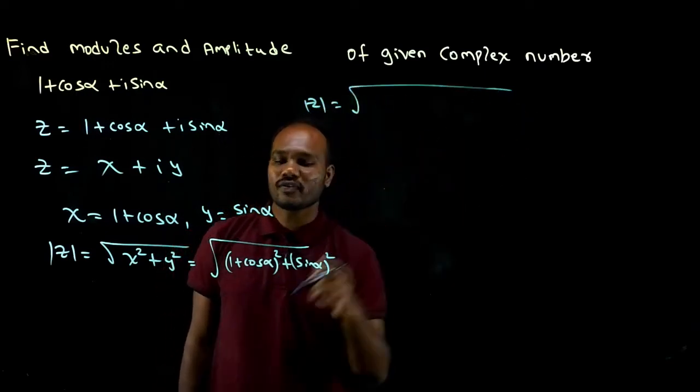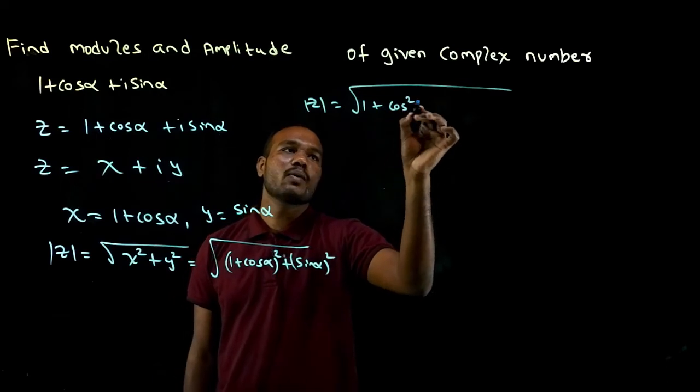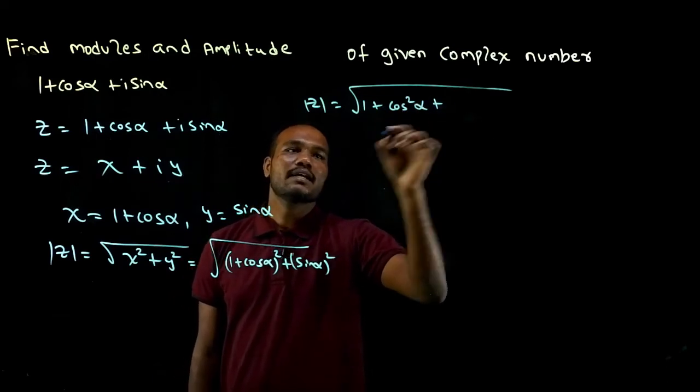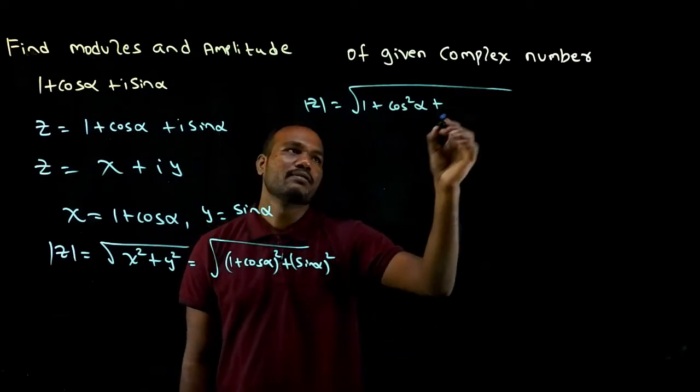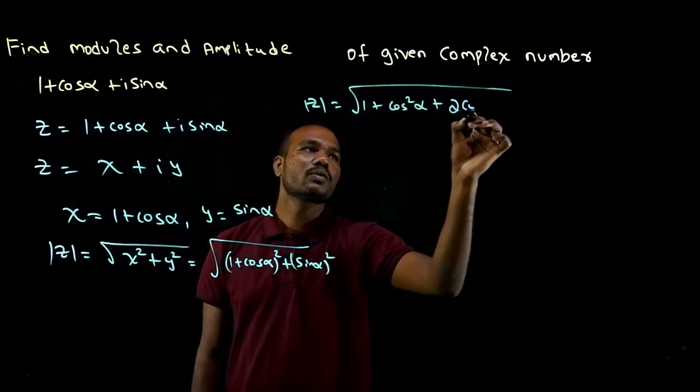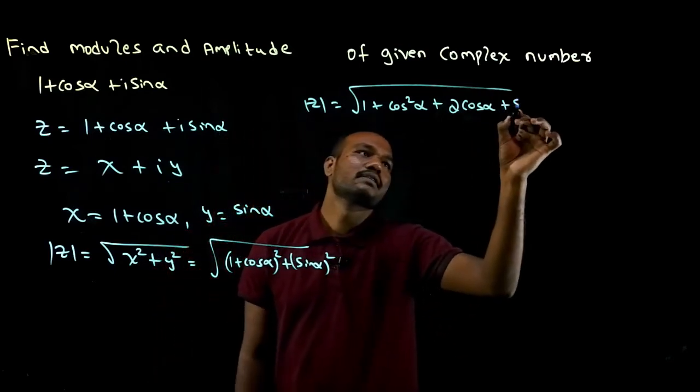You'll get root of 1 square plus cos square alpha plus 1 plus cos alpha whole square is a square plus b square plus 2ab, so 2 times 1 times cos alpha plus sine square alpha.